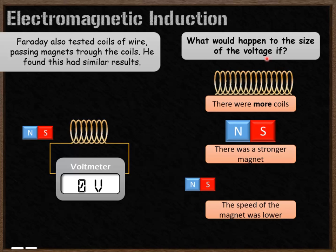If there are more coils of wire, there are more locations for electricity to be generated, resulting in a higher voltage. If the magnet is stronger, it's able to move more electrons as it passes through the coils, and the voltage will be higher.